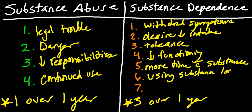Sixth, using the substance for longer than intended or in a larger amount than you meant to. For example, you meant to drink two beers on Saturday night but ended up drinking six or seven. Or you planned to spend 45 minutes high then go to work the next day, but actually spent two to four hours — that indicates longer use than intended. Seventh, continued use despite knowing it causes physical or mental problems.